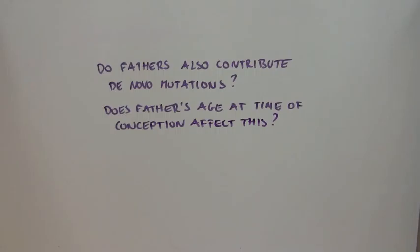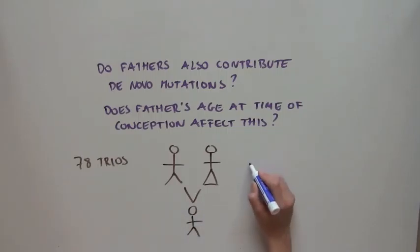To do this, the scientists used 78 trios, which included two parents and a child, from the Icelandic population.